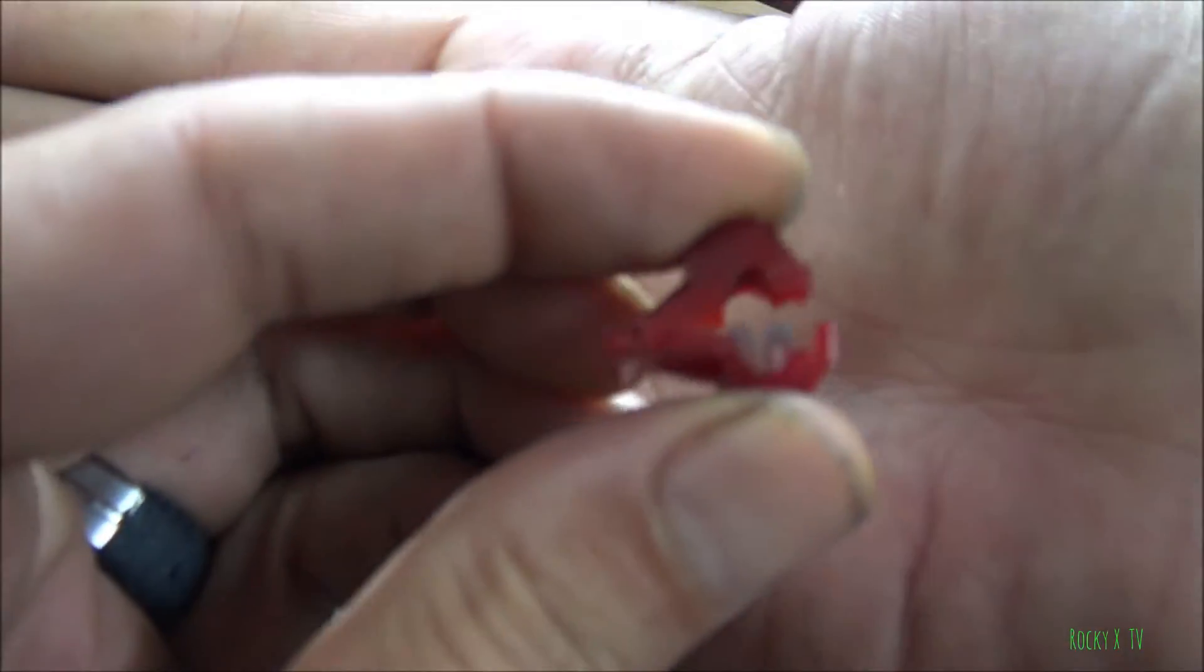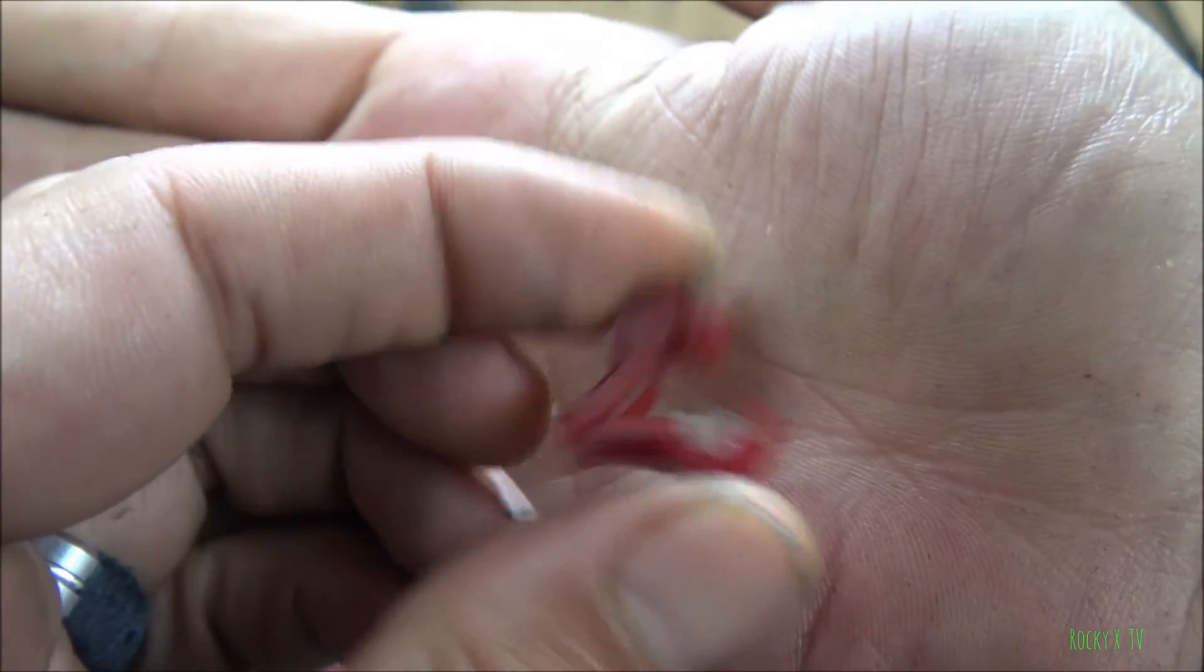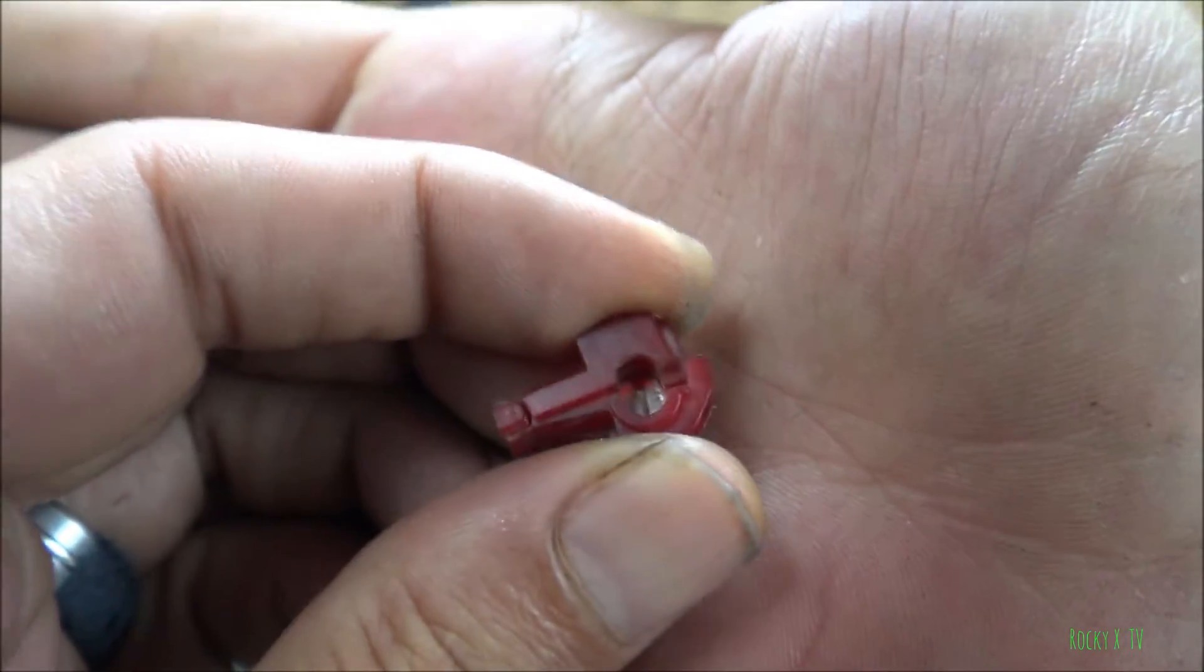And you clamp it shut, and it'll actually splice the insulation. They come in different sizes, the red, blue, and yellow, like your butt connectors and all your other connectors. So make sure you have the right size for the right wire.